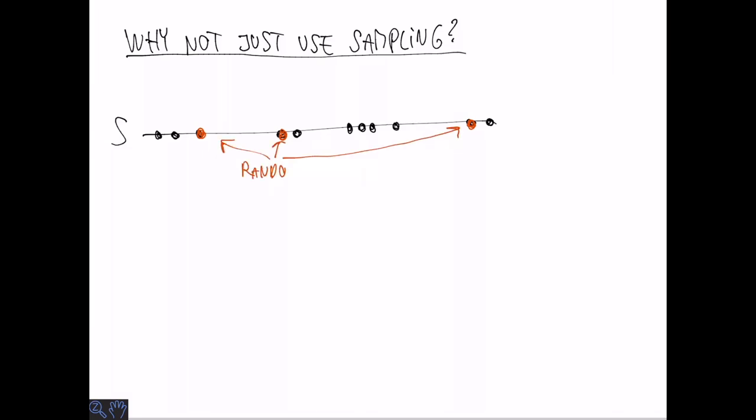But before we go on to discuss the summaries described in the book, let's consider why we don't just use sampling. We saw last week that sampling is a powerful primitive for estimating all kinds of things. We can take a random sample from S and intuitively it would spread relatively evenly across the range.